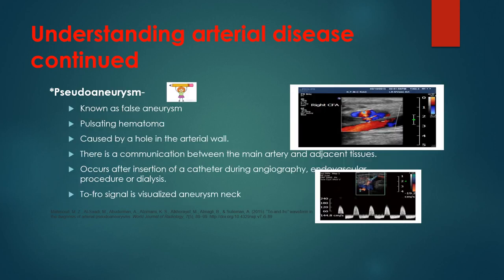A pseudo-aneurysm, also known as a false aneurysm, is a pulsating hematoma caused by a hole in the arterial wall. There is communication between the main artery and adjacent tissues, and it usually occurs after insertion of a catheter during angiography, an endovascular procedure, or dialysis. A to-and-fro signal is visualized in the aneurysm neck — you can see the hole in the wall, blood flowing into the tissues, and the waveform obtained right at the neck of the pseudo-aneurysm.